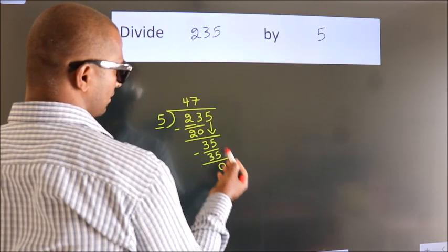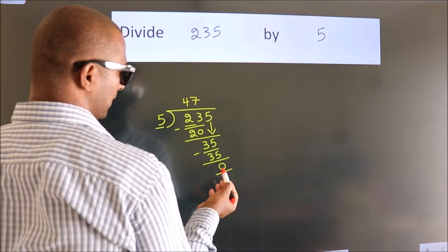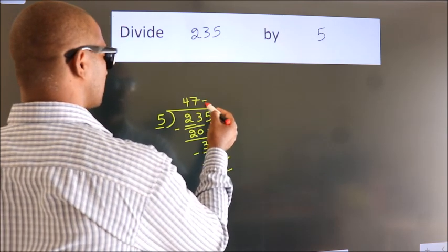After this, no more numbers to bring down, and we got remainder 0. So this is our quotient.